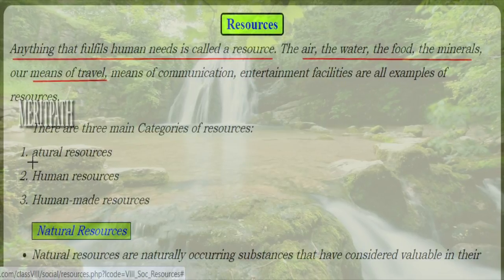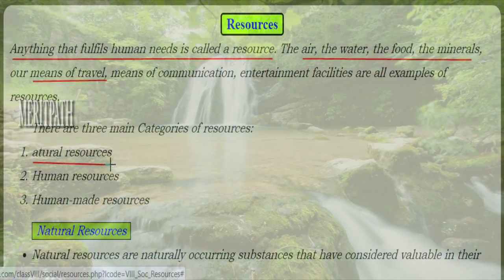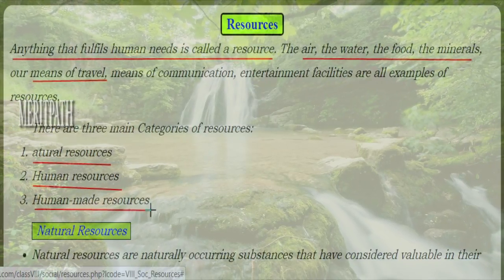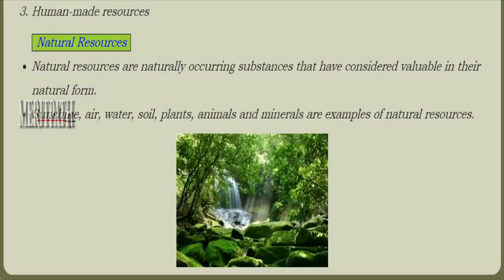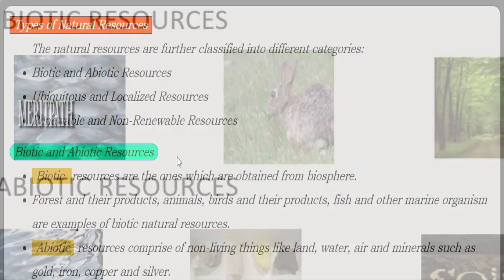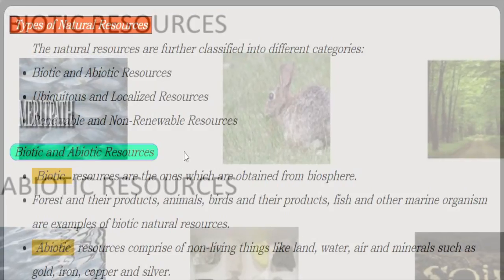Resources are generally categorized into three categories: natural resources, human resources, and human-made resources. Natural resources are those which are drawn from nature and come in a natural form — examples include sunshine, air, water, soil, plants, and minerals. Natural resources are further classified depending upon the level of development, use of stock, origin, and distribution.